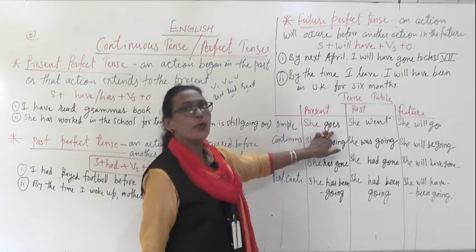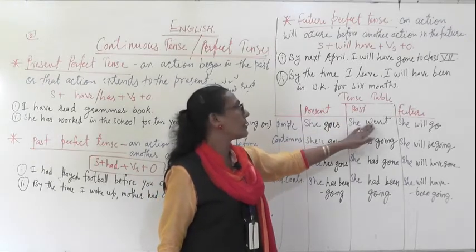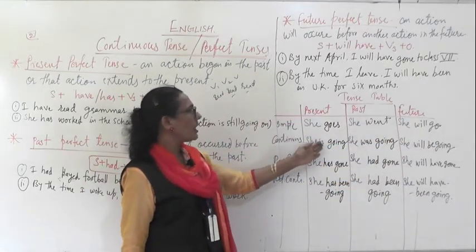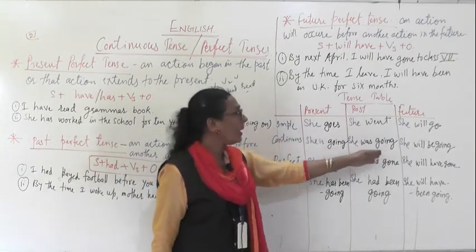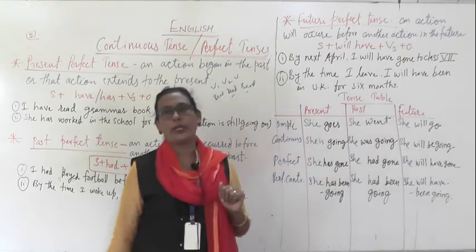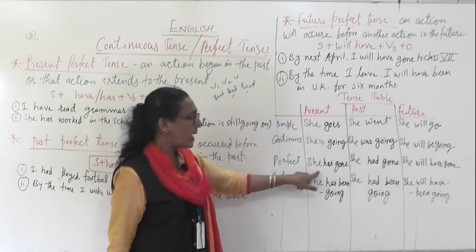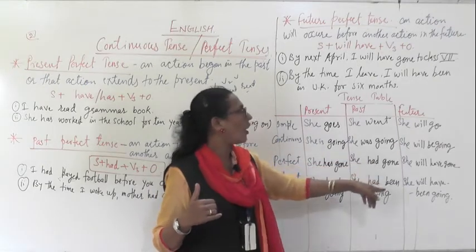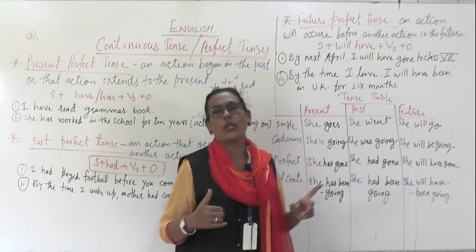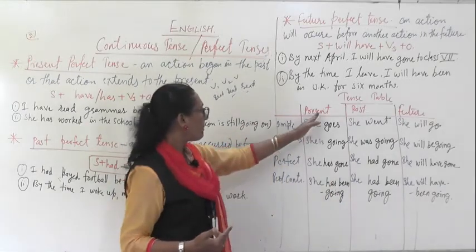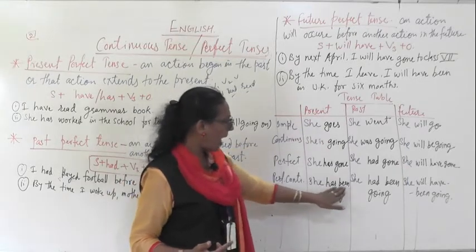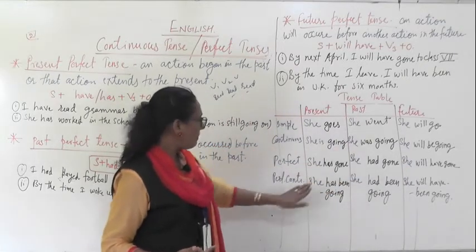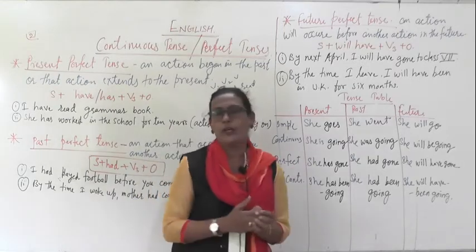From the table: Simple present — 'she goes'; simple past — 'she went'; simple future — 'she will go'. Present continuous — 'she is going'; past continuous — 'she was going'; future continuous — 'she will be going'. Present perfect — 'she has gone'; past perfect — 'she had gone'; future perfect — 'she will have gone'. Present perfect continuous — 'she has been going'; past perfect continuous — 'she had been going'; future perfect continuous — 'she will have been going'.